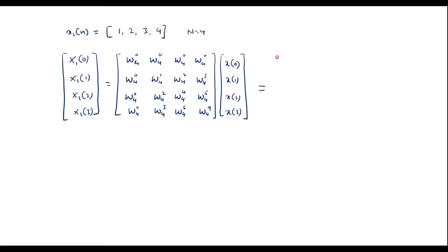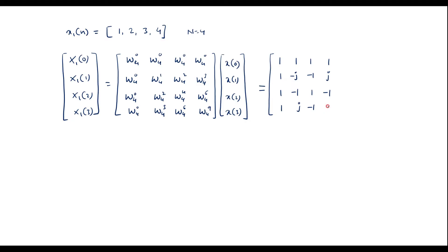Now let me write the twiddle factor values. The first row is [1, 1, 1, 1]. The second row is [1, -j, -1, +j]. The third row is [1, -1, 1, -1]. The fourth row is [1, j, -1, -j]. The input column matrix with values x1(n) = [1, 2, 3, 4].